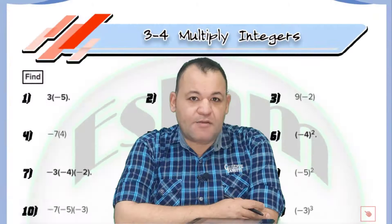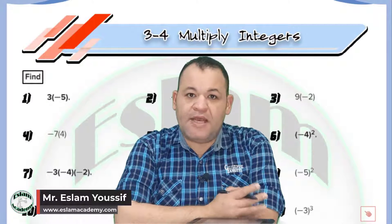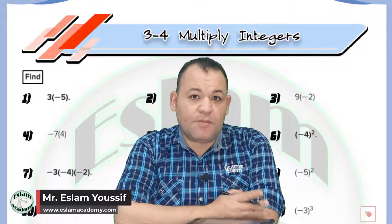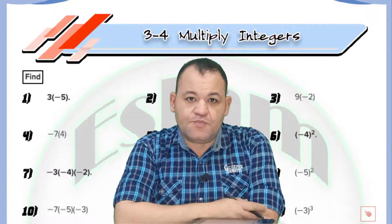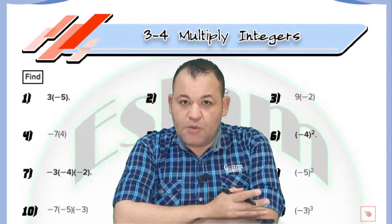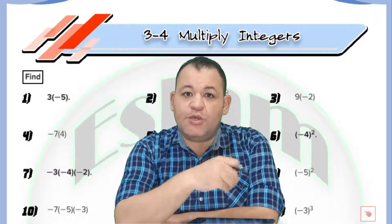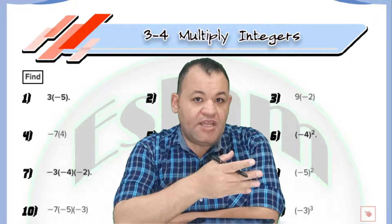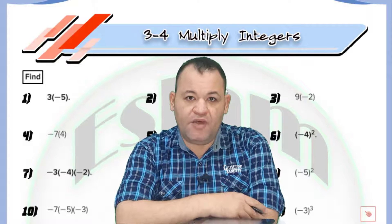Welcome back with a new math tutorial. In this video, we are talking about multiplying integers. As we said before, integers are the positive, negative, and zero. Zero is neither positive nor negative. Anything related to an increase will be a positive value, and anything related to a decrease will be a negative value.